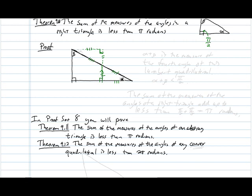And so now, this alpha angle here, down here, ends up being over here. So alpha plus beta is the measure of the fourth angle of this Lambert quadrilateral. And as such, alpha plus beta must be less than pi over 2. Now, since our third angle is pi over 2 itself, this means that the sum of the measures